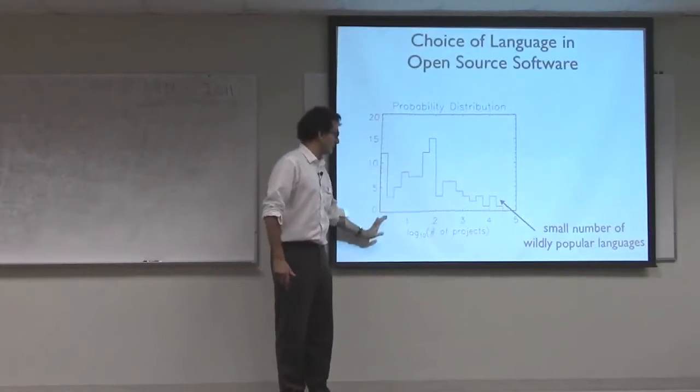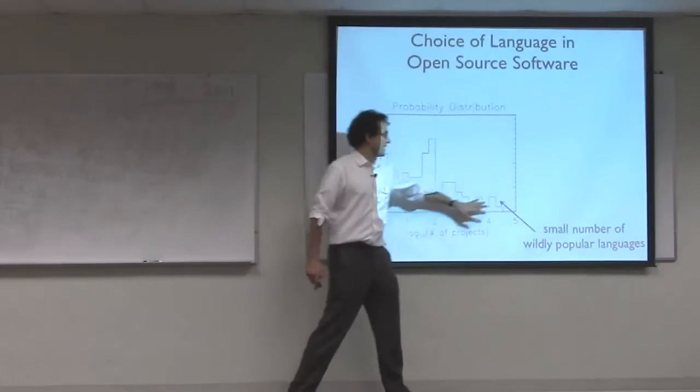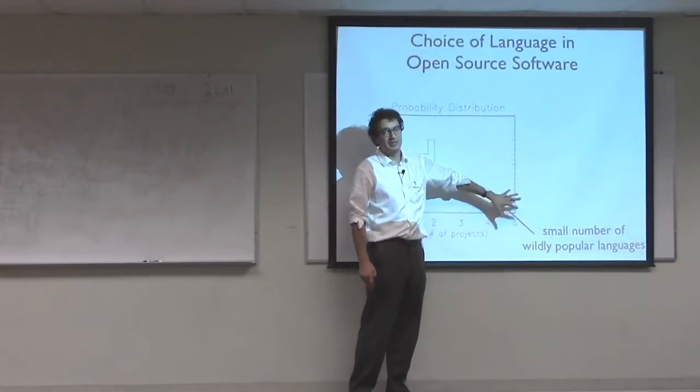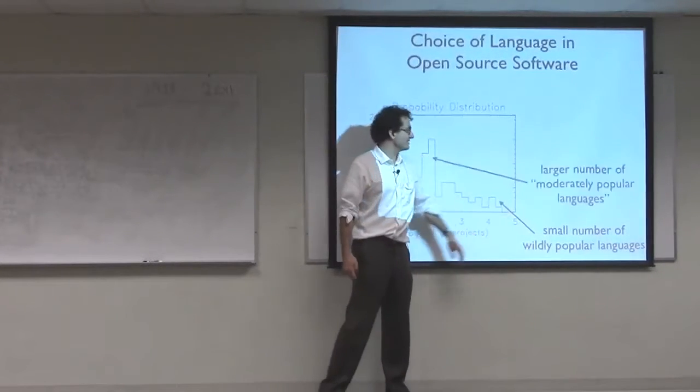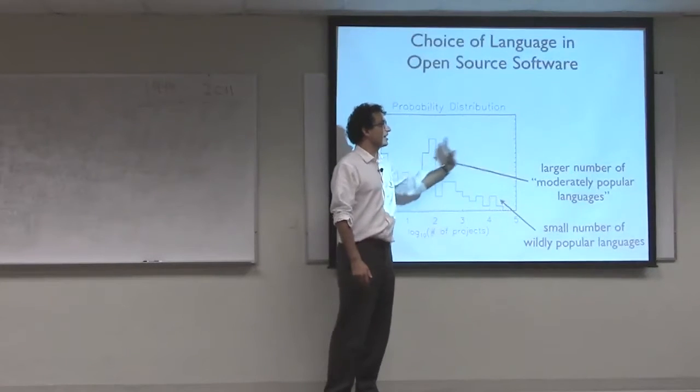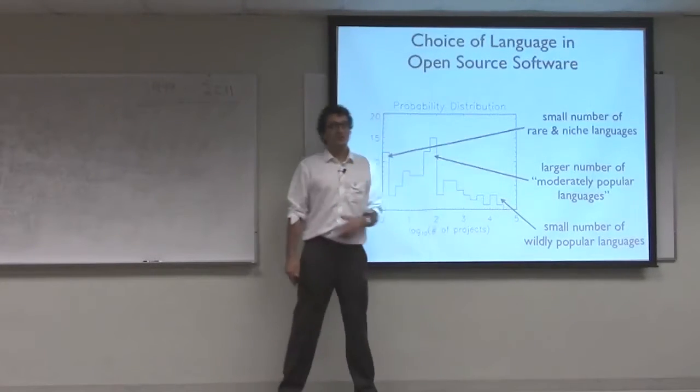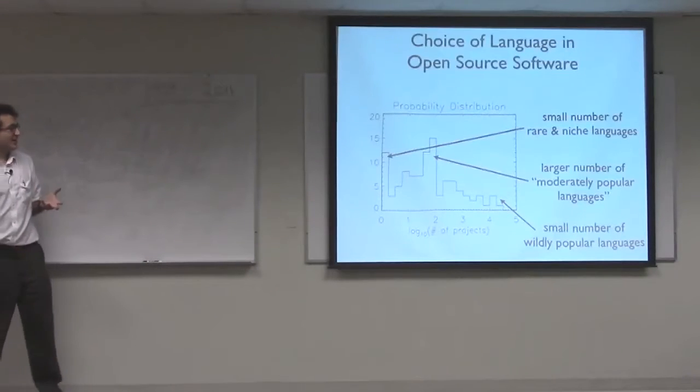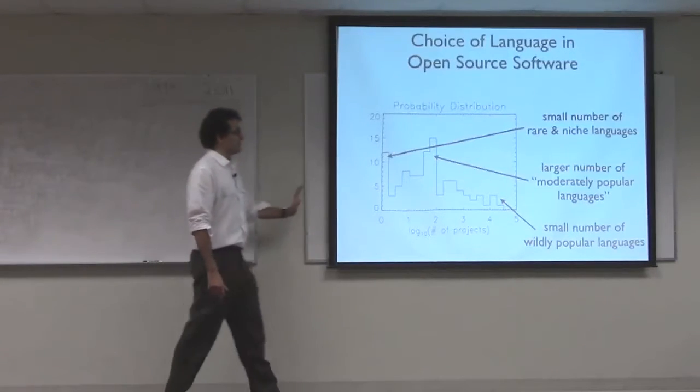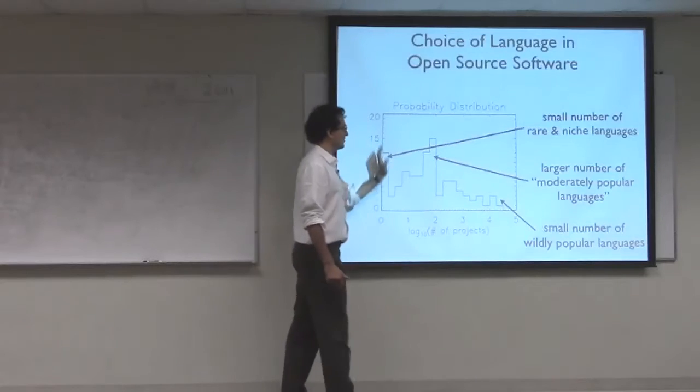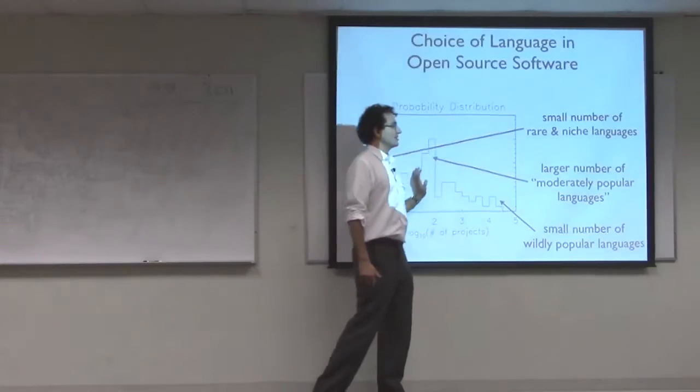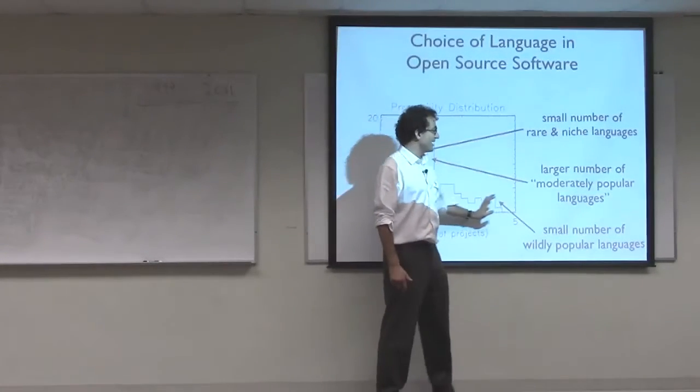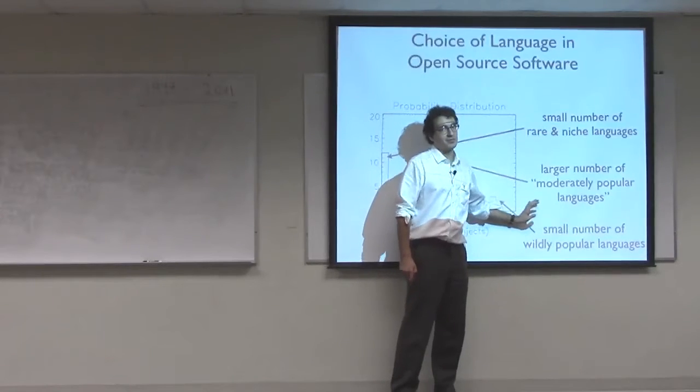Somewhere in the middle, between the extreme rare birds and these incredibly common, these are sort of the bacteria of the open source movement, somewhere in the middle here you have a larger number of moderately popular languages. So this distribution of languages is what we're going to try to explain using maximum entropy methods. There's a small number of rare languages, a larger number of moderately popular ones, and then again a very small number of wildly popular languages.